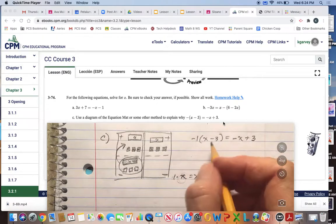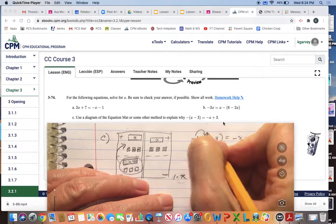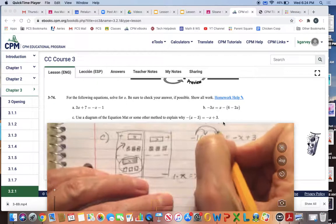Now we use the distributive property. We multiply this term times the first term, and we multiply it times the second term.